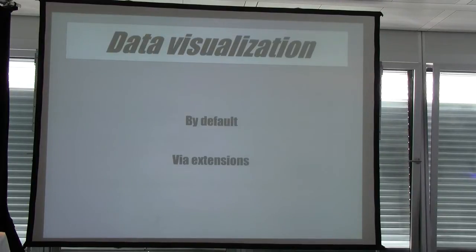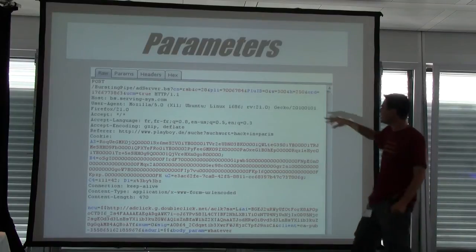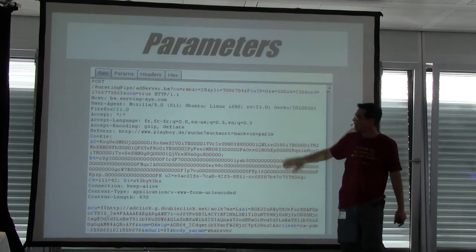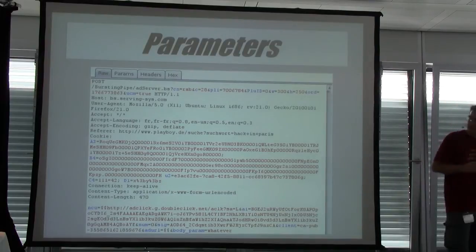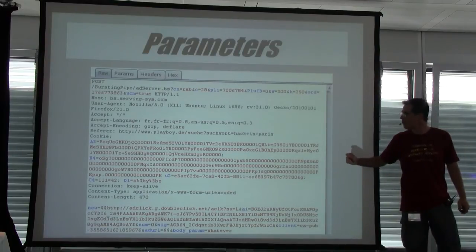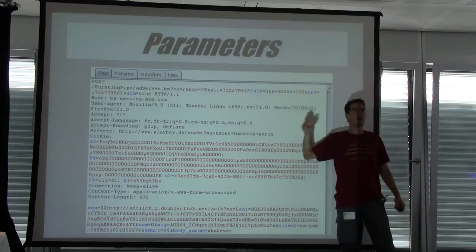First, data visualization. During a pen test you will encounter a lot of different formats depending on the underlying technologies used by the application. Burp provides a few formats by default and a few others via extensions. In the raw pane, an application using GPC parameters — GET, POST, and cookie — gives you some color highlighting. But if you want to suppress one parameter, you have to look for the semicolon or ampersand and you'll probably miss it or waste time.